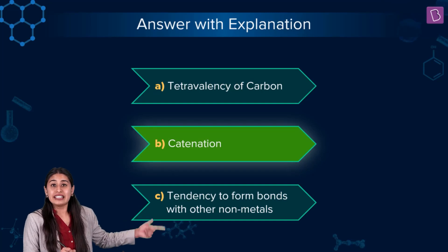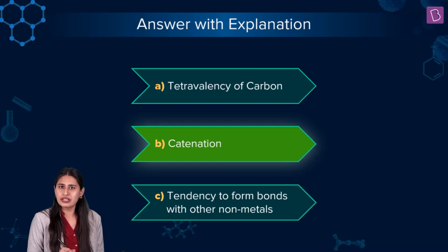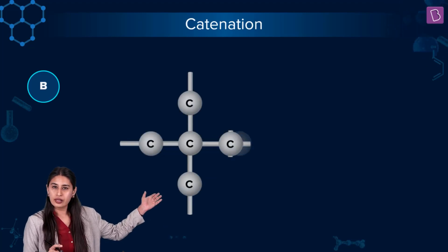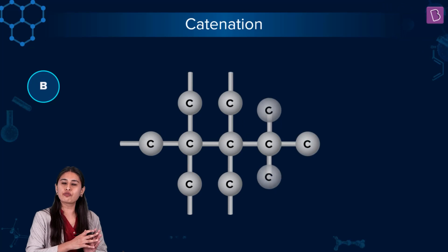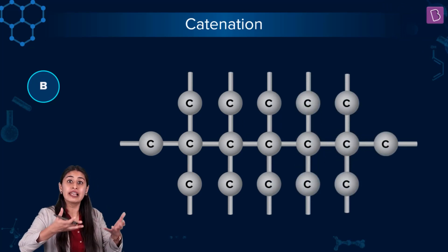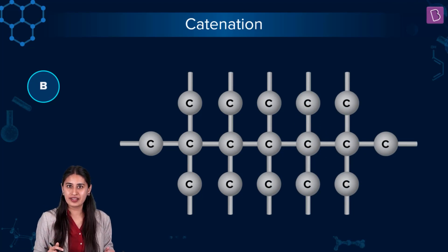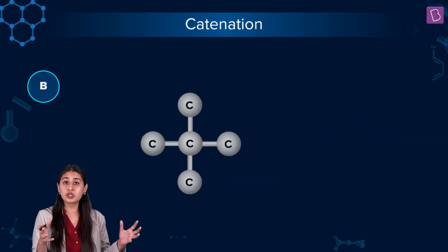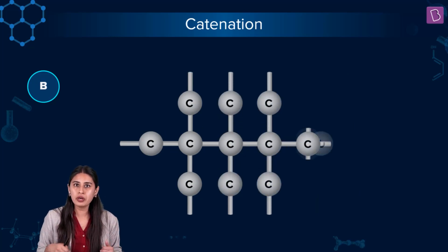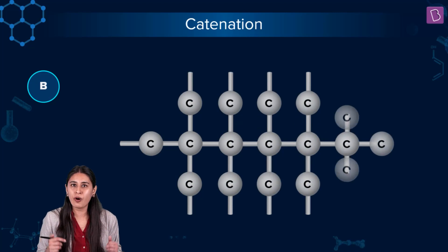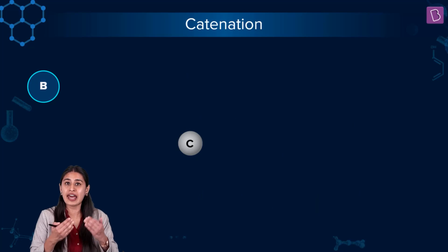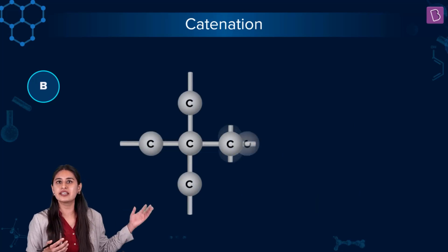The second property is catenation — the self-linking property of carbon. Carbon has a tendency to form bonds with its own atoms. This includes not just carbon-carbon single bonds, but also carbon-carbon double bonds and carbon-carbon triple bonds. This great tendency to form bonds with itself is called catenation.